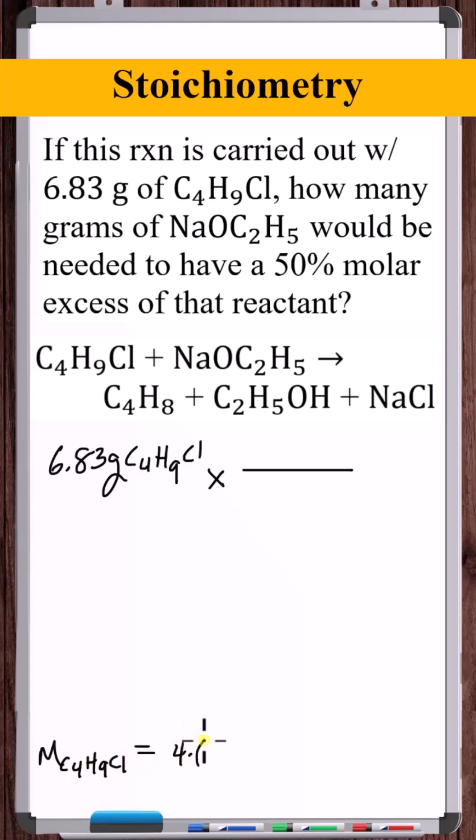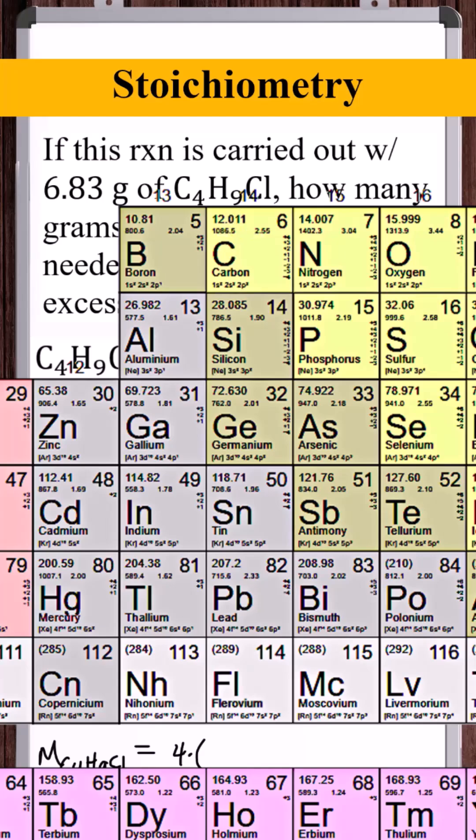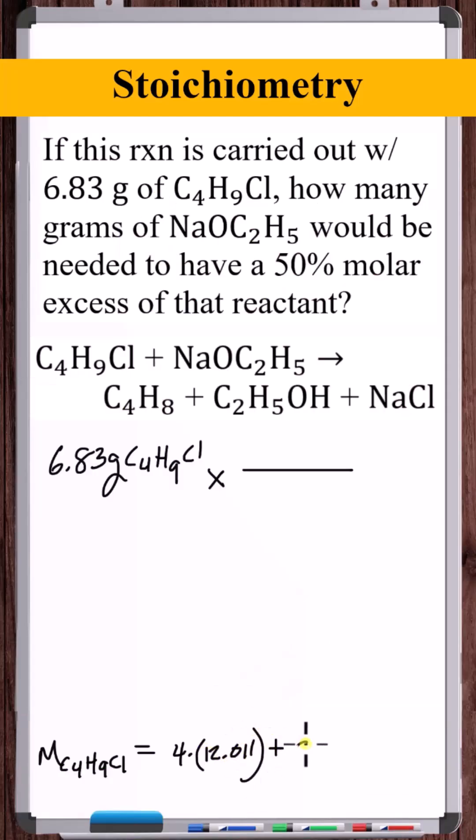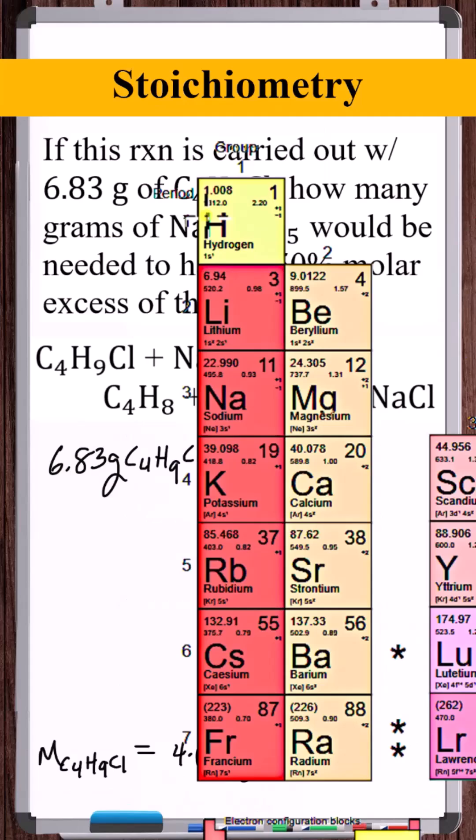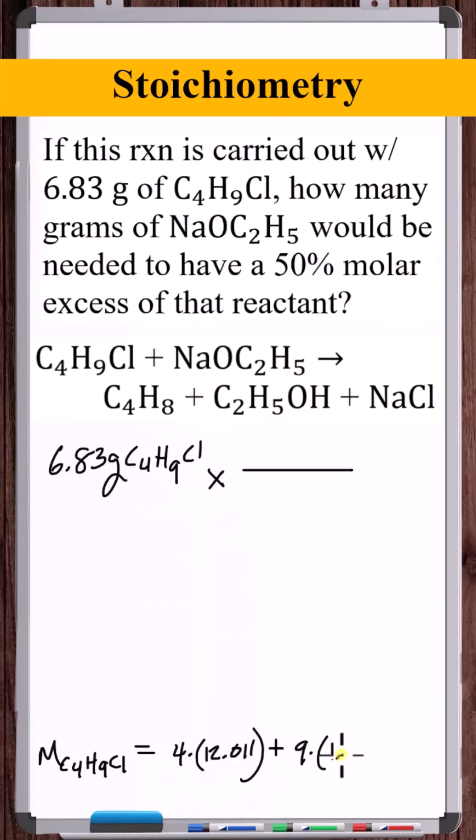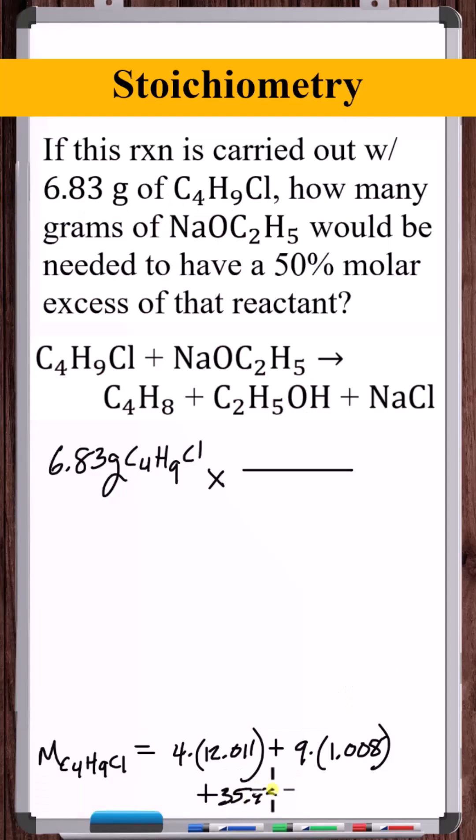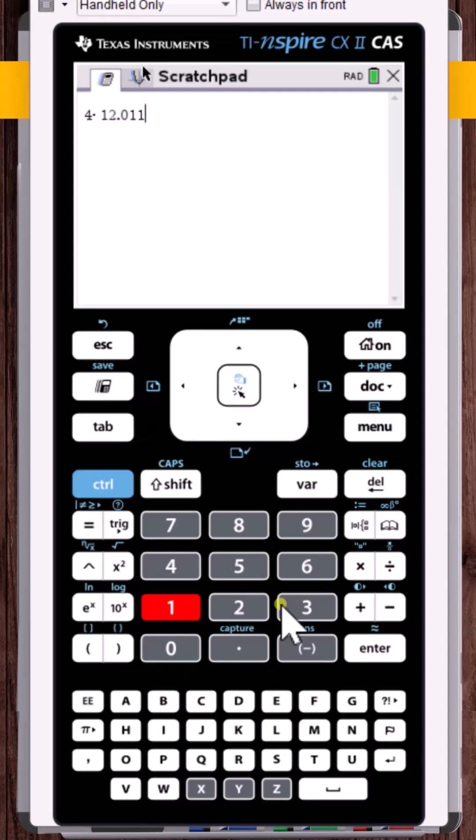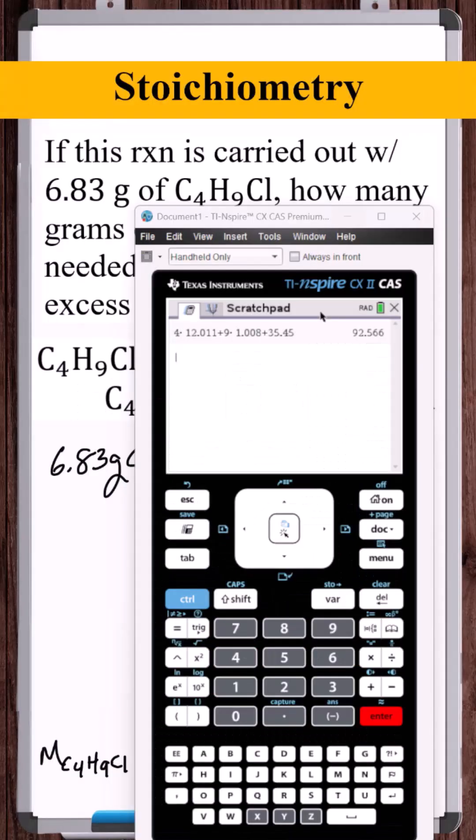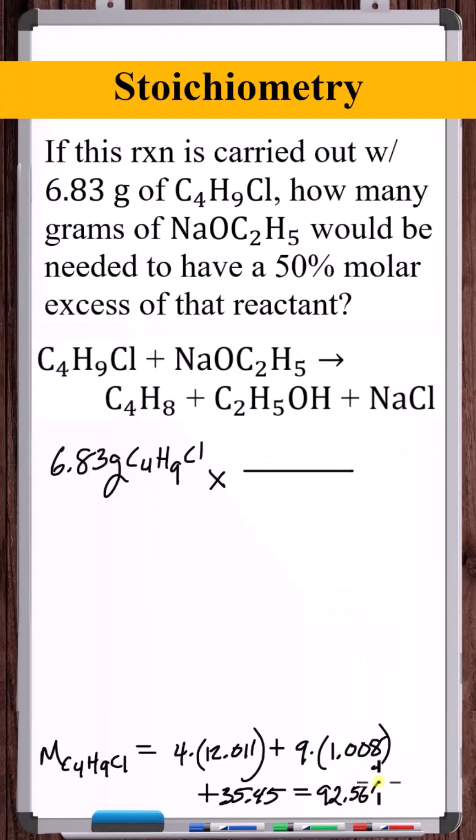We've got four carbon atoms, molar mass of carbon is 12.011. Nine hydrogen atoms, molar mass of hydrogen is 1.008. And a chlorine atom, 35.45. This gives us 92.566 grams of C4H9Cl per mole of C4H9Cl.